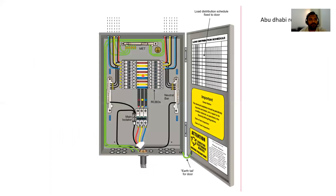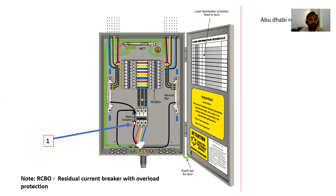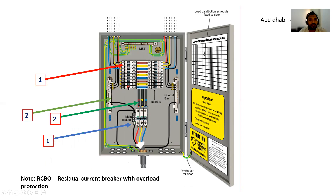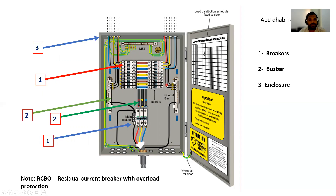Here we can see the distribution board — the main incomer, MCBs as outgoing breakers, the internal RYB bus bars, the neutral bus bars, and the earth bus bars, and finally the enclosure. These three elements — breakers, bus bars, and enclosures — are what we will learn today.